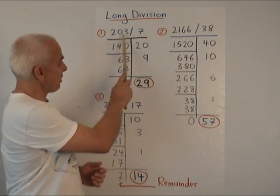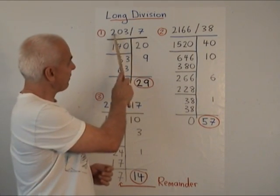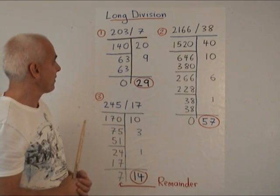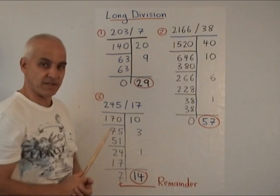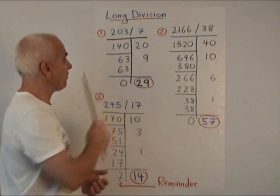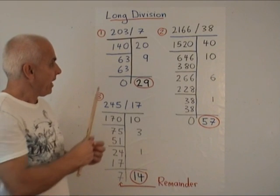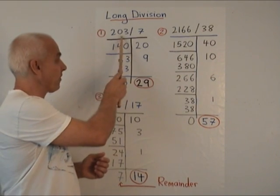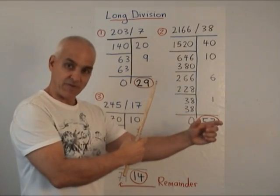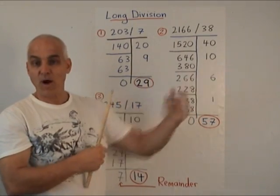So first we look at 203 and ask, how many sevens could safely fit inside there? We want an underestimate. Perhaps 20 sevens fit inside. 20 times 7 is 140, so we write 140 there. When we subtract 140 from 203, we get 63. So after we've peeled off 20 sevens, there are 63 ones left.